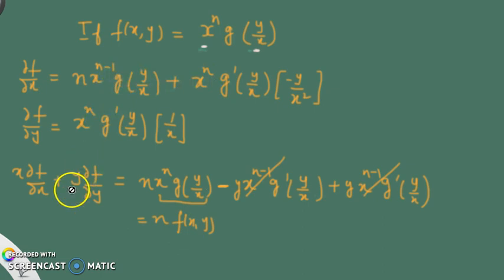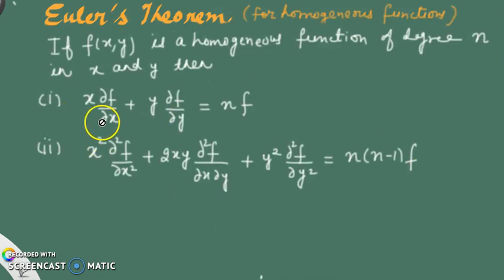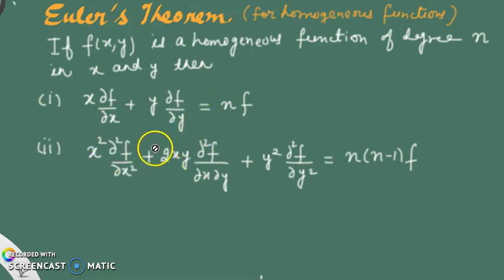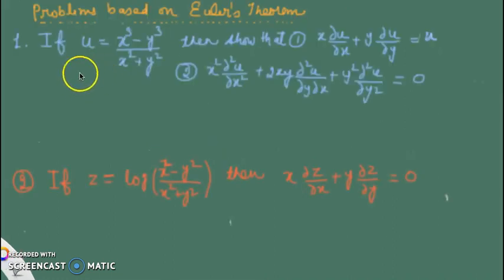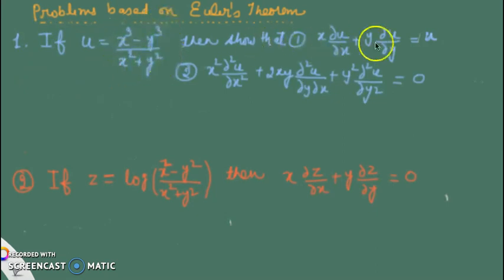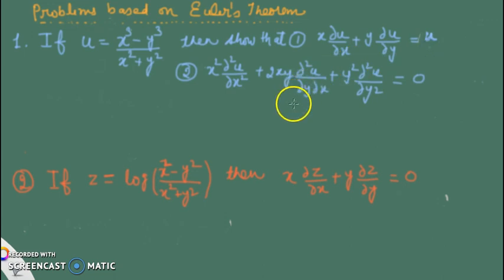For the second-order result, if you differentiate the first result with respect to x and then with respect to y and add, you will get the second result. This is just a quick review of how we derived it. Now let's take the first example: if u = (x³ - y³)/(x² + y), we have to show that x ∂u/∂x + y ∂u/∂y = u, and then verify the second result for the double derivative.